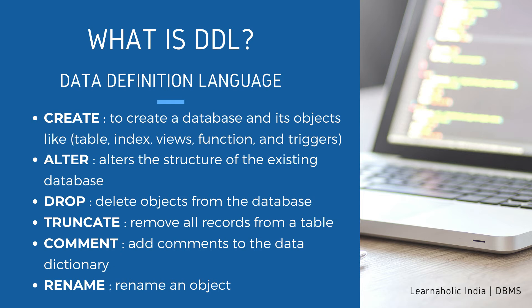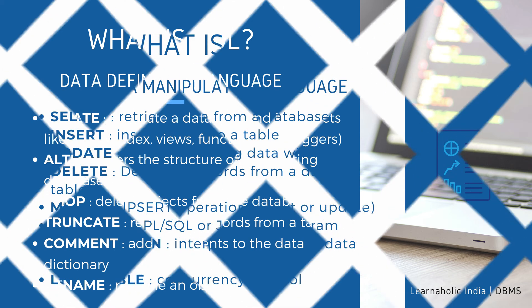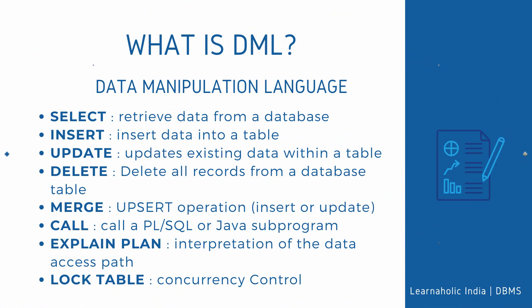TRUNCATE — this statement removes all records from a table, including all spaces allocated for the records. COMMENT — it adds comments to the data dictionary. RENAME — it is used to rename an object. Now let's see what is DML.